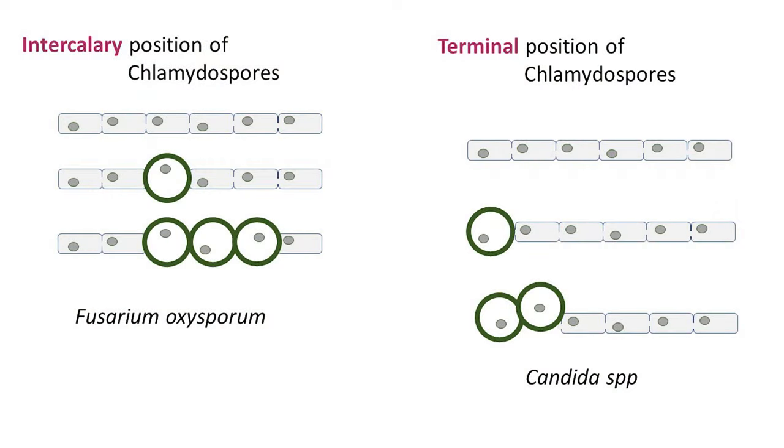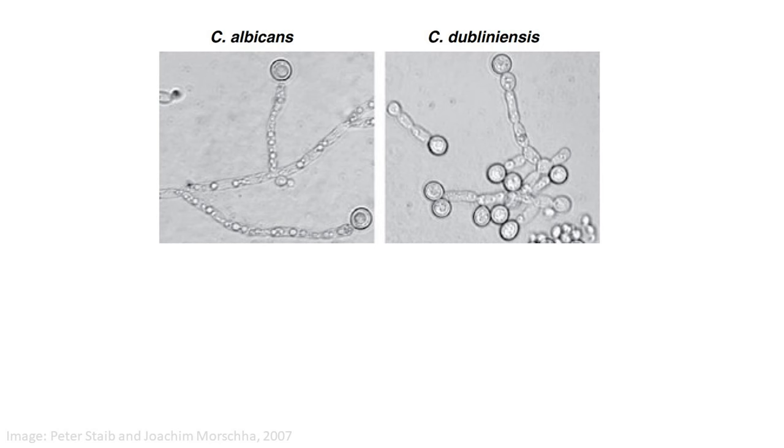Terminal single or multiple chlamydospores are found at the end of hyphae in, for instance, Candida species. It's fascinating that certain parameters of chlamydospore formation possess diagnostic significance in the medical mycology laboratory. For example, chlamydospores serve as a valuable tool for distinguishing closely related species of human pathogenic yeasts such as Candida albicans and Candida dubliniensis.